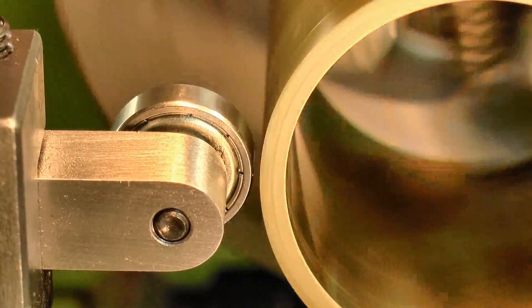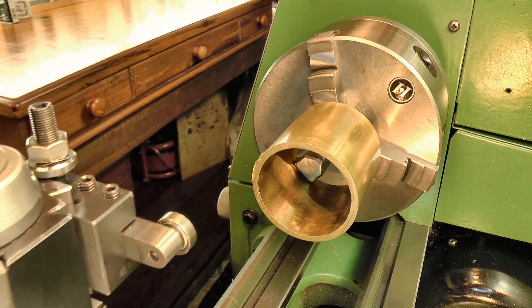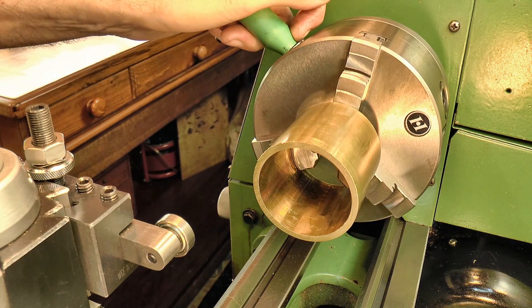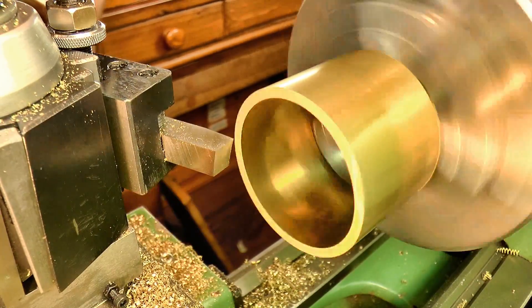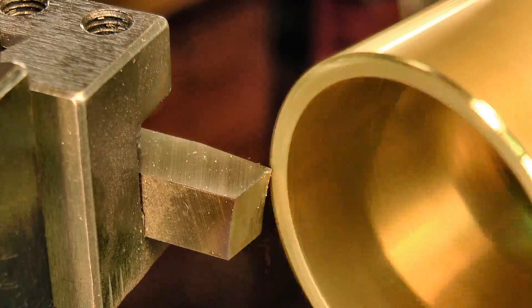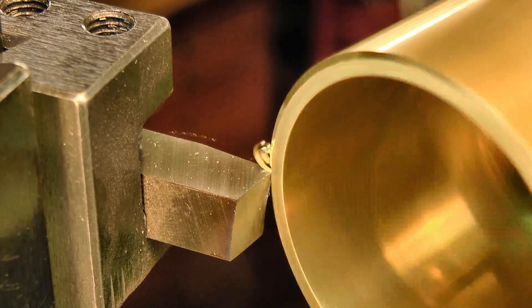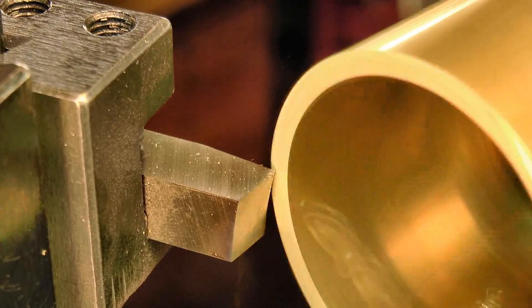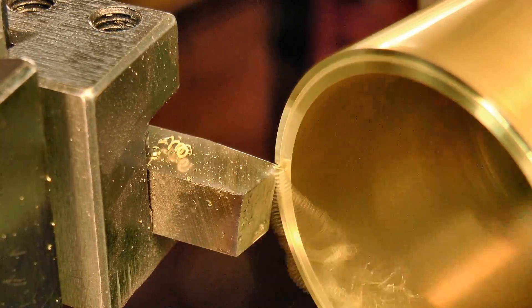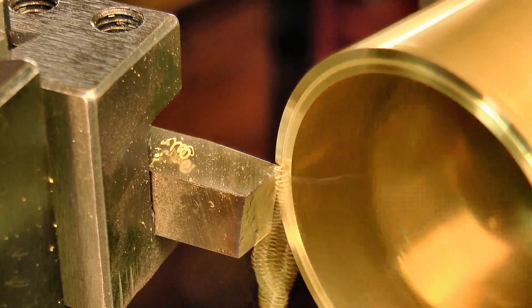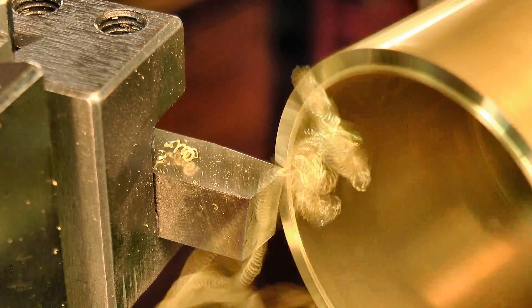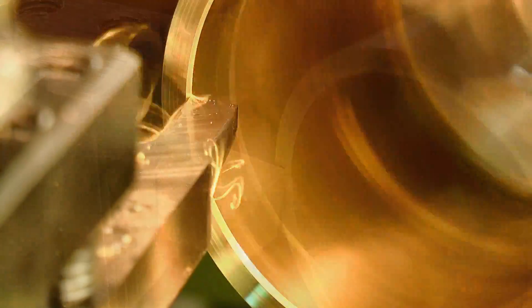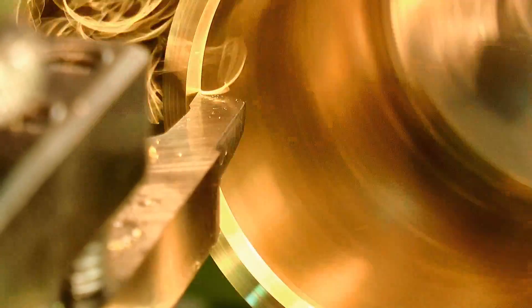Once it's running true on the chuck, the jaws can be tightened. The rough edge was then tidied up with a facing cut. And you can see from the long stringy chips, this is not a free machining brass, but rather a lead free variety. It's not my favorite brass to machine, but with the right speeds and feeds, it does give a good result.